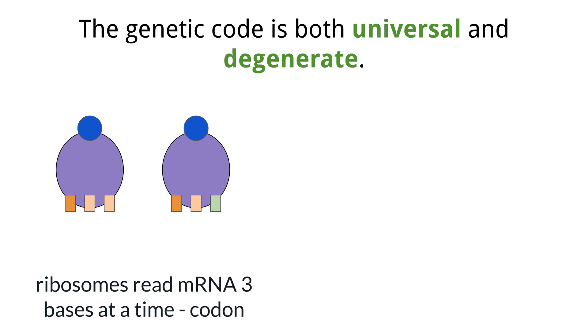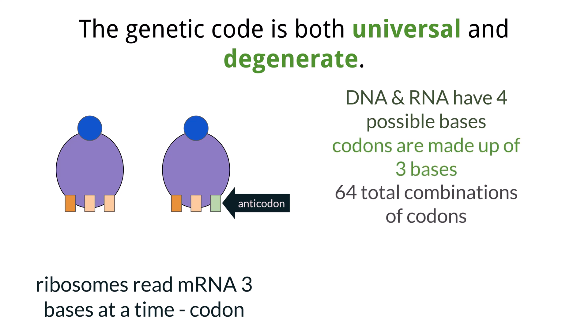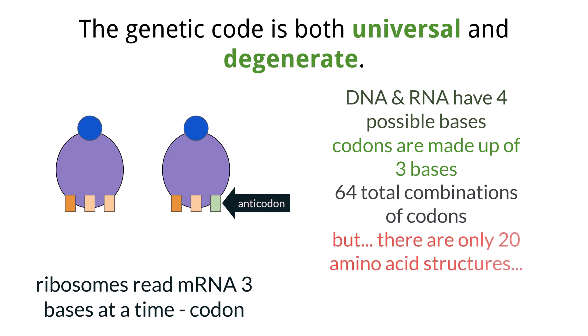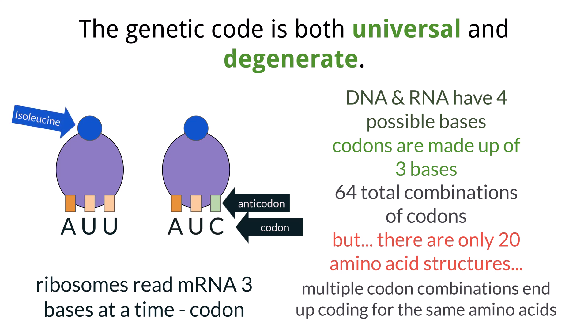Each codon is matched up with a complementary anticodon on the tRNA molecule that carries a specific amino acid. Because DNA and RNA have four possible bases in their code, and a codon is made up of three of those bases, there are 64 total combinations that are possible. But even though there are 64 possible codon combinations, there are actually only 20 possible amino acids. So what ends up happening is that there are multiple codon configurations that code for the same amino acid. For example, the codon AUU and the codon AUC will both pair with tRNA molecules that hold the amino acid isoleucine. This concept of having more than one codon code for the same amino acid is called degeneracy.